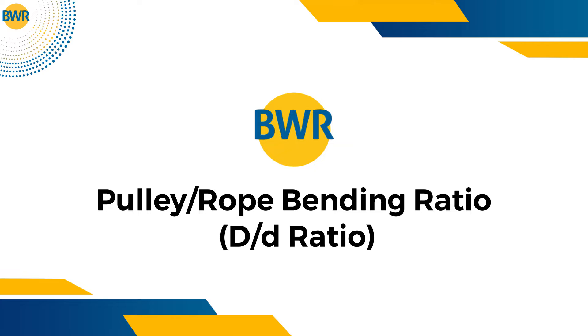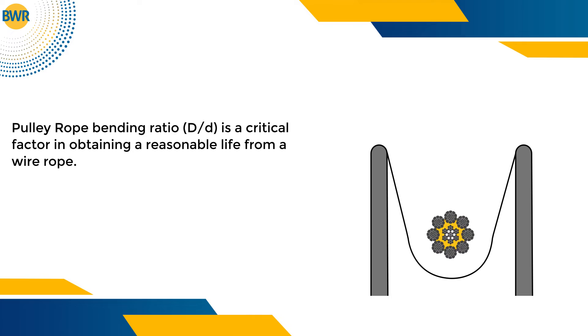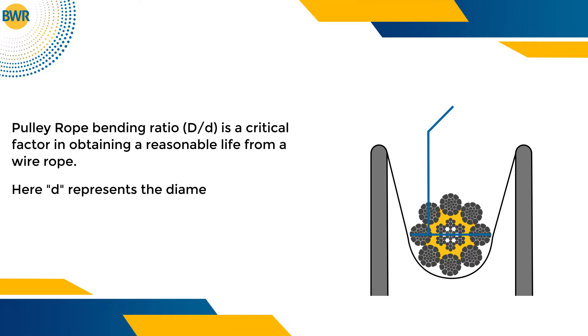In this video, we will discuss the pulley rope bending ratio (D/d), which is a critical factor in obtaining a reasonable life from a wire rope. Here, small 'd' represents the diameter of the wire rope.